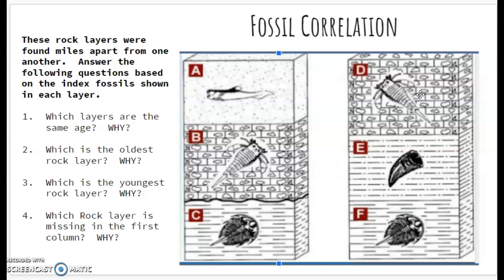So for the oldest rock layers, we would look to the bottom of these columns. And we know that letter C and letter F are the same rock layers. So our answer, because they're at the bottom, would be letter C and letter F.